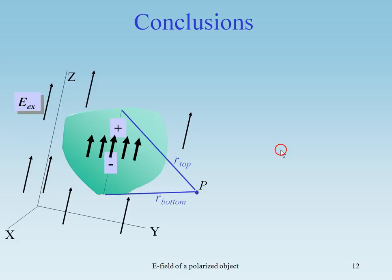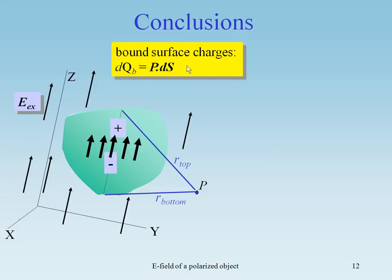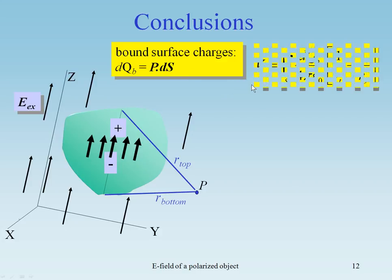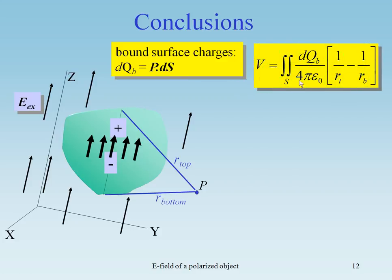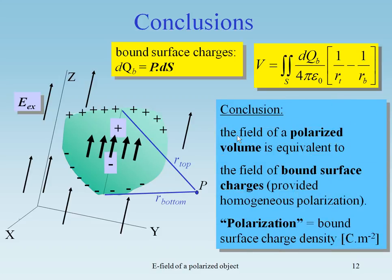Conclusions. We have bound surface charges: dq equals P·dS. V can be written as the integral over the surface of dq. The conclusion is: the field of a polarized volume is equivalent to the field of bound surface charges, provided homogeneous polarization. And the polarization is defined as the bound surface charge density in coulombs per square meter. Thank you very much.